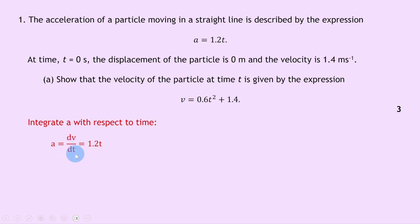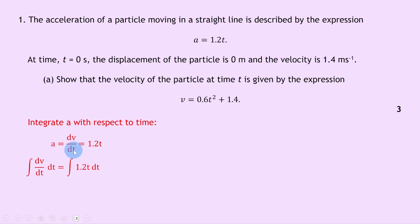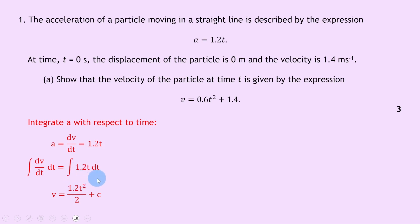Now that we have dv/dt equal to 1.2t, we can integrate both sides with respect to time. The integral of dv/dt dt equals the integral of 1.2t dt. Integrating dv/dt with respect to time gives velocity v. The right-hand side integrates to 1.2t squared divided by 2 — remember, we raise the power by 1 and divide by the new power — plus c, our constant of integration.